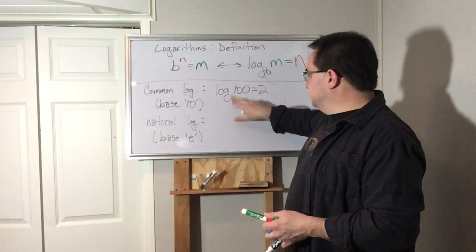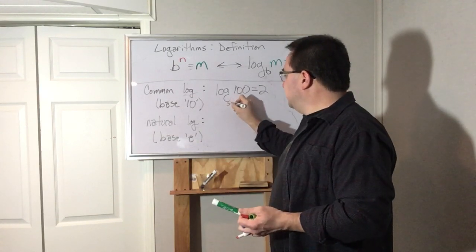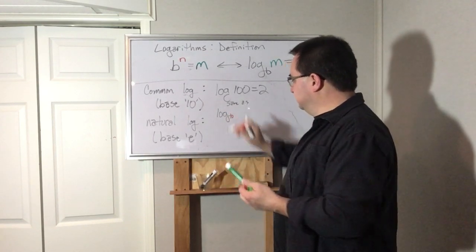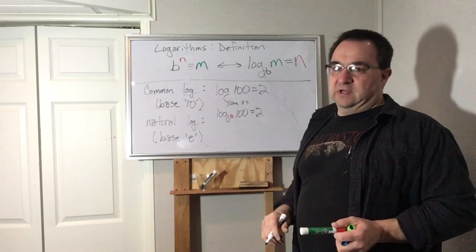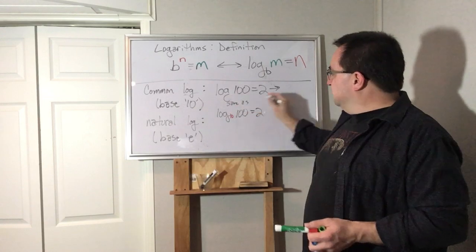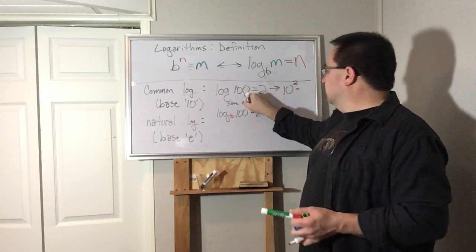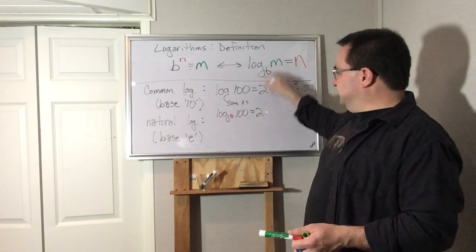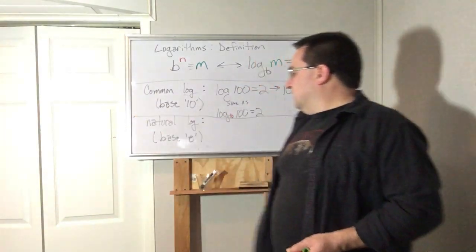So if, let me write it this way. This is the same as log base 10 of 100 equals 2. So if I had to rewrite this, I would have to understand there's no number there, it's actually a 10 and it's raised to the second power. And that equals 100. See, that one's a little weird because it's missing one of the parts because it's understood.